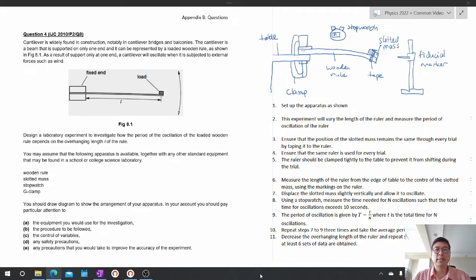Hello, welcome to the second practical planning lecture. Last lecture I asked you to do some homework which is question 4 in Appendix B. This is a single variable experiment involving simple harmonic motion.